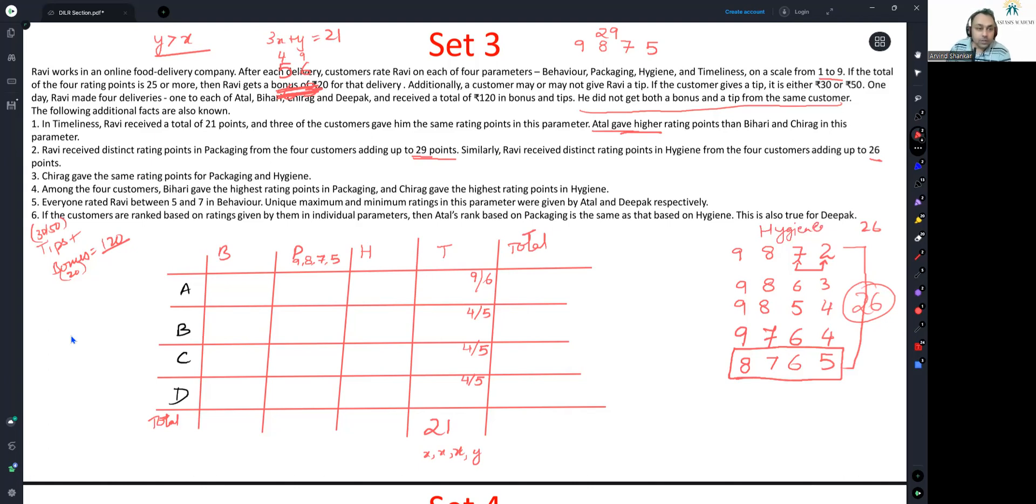Let's go. Chirag gave the same points for packaging and hygiene. So if he gave A here, he also gave A here. Next, among the four customers, Bihari gave the highest rating points in packaging. So Bihari definitely gave 9 here. And Chirag gave the highest rating points in hygiene. Now see, Chirag has to give either 8 or 7 or 5 and it should also be the highest in hygiene. The only possible way is if he gave 8 here and 8 here. If he gave 8 here, it also means the four rating points obtained in hygiene are 8, 7, 6 and 5. This is also known.